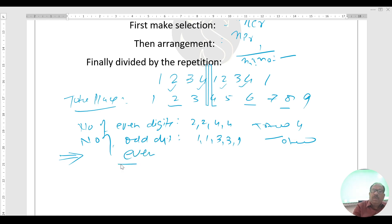First even. Multiply by odd. Even: first make the selection 4C4, then arrangement, divided by the repetition 2 factorial times 2 factorial. Multiply by odd: number of places 5, 5C5 into arrangement.